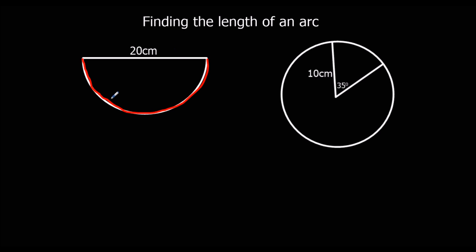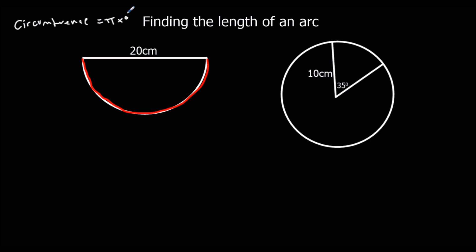When we've got half a circle, all we've got to do is find the circumference of a circle and half it. The circumference of a circle is pi times the diameter, or 2 times pi times the radius.